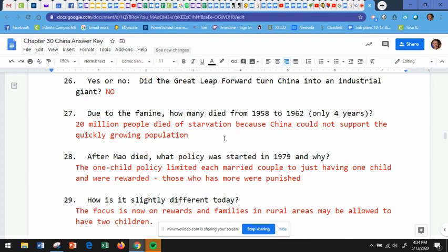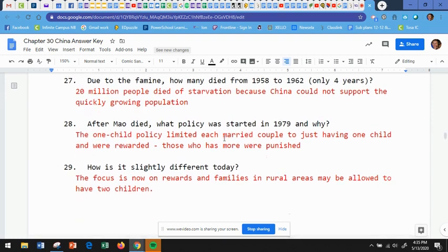Number 28, after Mao died, what policy was started in 1979 and why? Number 28 really is an important concept that many of you may have heard of and they are now kind of going away from. But it's called the one child policy, which limited each married couple to just having one child and they were then rewarded if they only had one child. Those who have more were punished. So they didn't get as much money or something else happened. So those who had more children were punished. So it was encouraged that they would only have one child. So how is it slightly different today? Well, today the focus is on rewards and they are given more tax breaks and things like that if they only have one child. But families in rural areas may be allowed to have two children or more because they need them for farming.